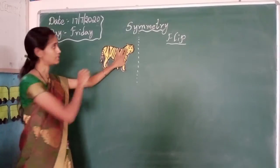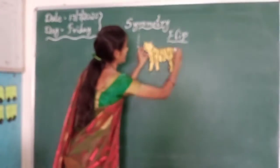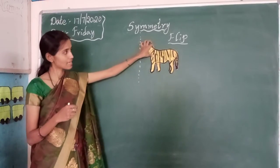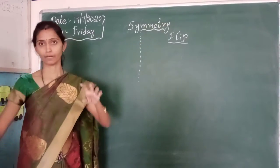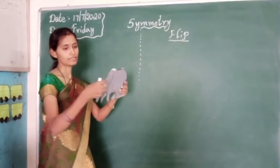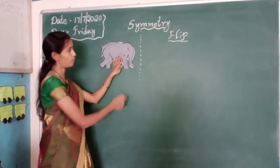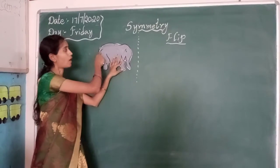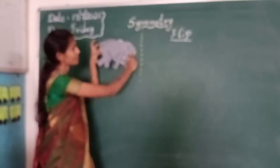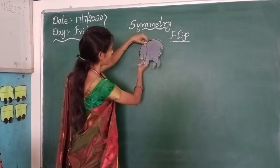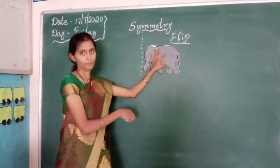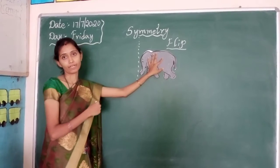A tiger — if I flip to the other side, the right side becomes left side and the left side becomes right side. In the same way, I will show you one more example where you can find an elephant. This is an elephant where the trunk and tail is at the back. Now if I flip a figure in this direction, right becomes left and left becomes right.